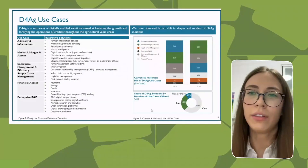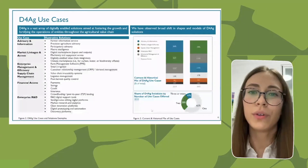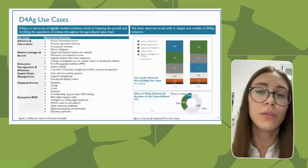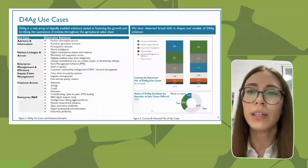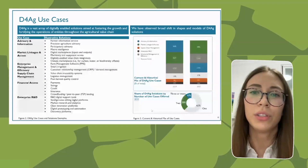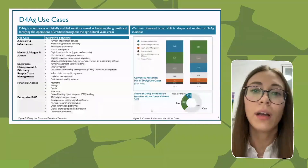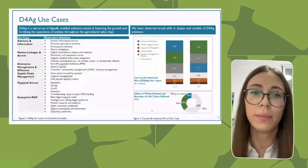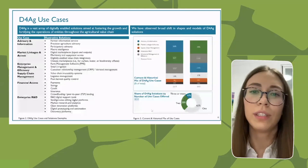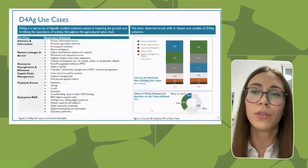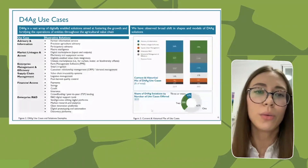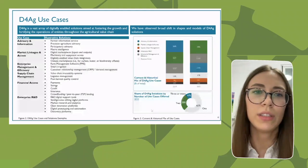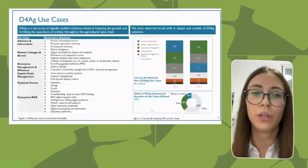One notable macro-level change we wanted to highlight is the shift from solutions focusing on advisory and information to those enhancing market access. This is likely powered by the post-COVID-19 surge in e-commerce and digital marketplaces, as well as clearer and easier monetization models for market linkage tools. Another trend signaling sector maturation is a clear tendency towards bundling — now more than 40 percent of digital agritechs offer multiple use cases rather than focusing on specific point solutions.